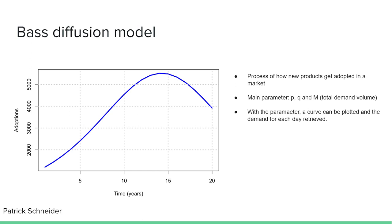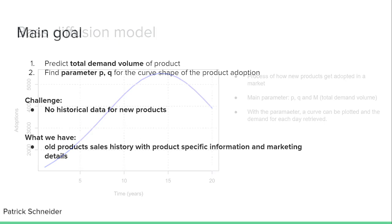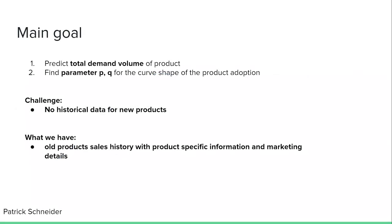For people not familiar with the matter, a curve of product sales can be fitted based on three parameters: p, q, and m. M represents the total demand volume, where p and q are parameters that define the curve behavior over a seasonal life cycle. If we can retrieve the parameters, we can plot a forecast curve for new products. So our main goal will be not to forecast single sales, but instead predict the total demand volume of the new product, as well as find the p and q parameters that define the curve shape.